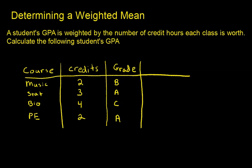To calculate a weighted mean, basically this B is showing up twice, and this A is showing up three times. It's weighted by the number of credit hours. This C is showing up four times because it's worth four credits. The credit hours is the weight, so I'm going to put a W on top of that.